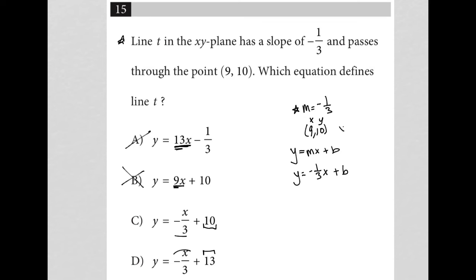I know that x equals 9 when y equals 10, so my equation turns into 10 equals negative one-third times 9 plus b. We have 10 equals negative one-third of 9, which is negative 3, so 10 equals negative 3 plus b.